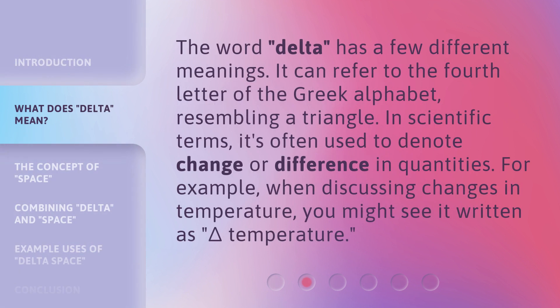The word Delta has a few different meanings. It can refer to the fourth letter of the Greek alphabet, resembling a triangle. In scientific terms, it's often used to denote change or difference in quantities. For example, when discussing changes in temperature, you might see it written as Delta Temperature.